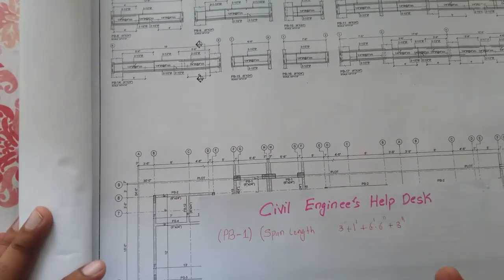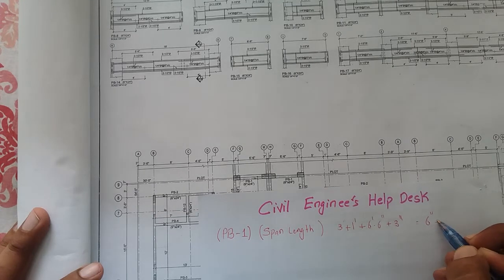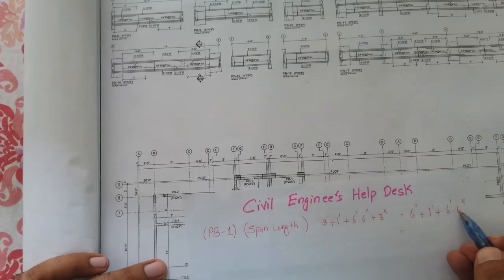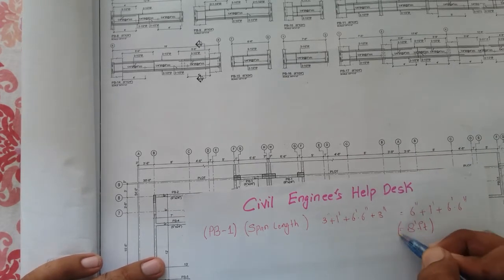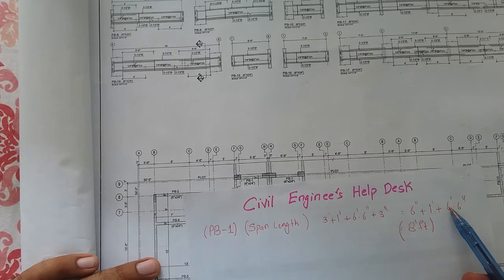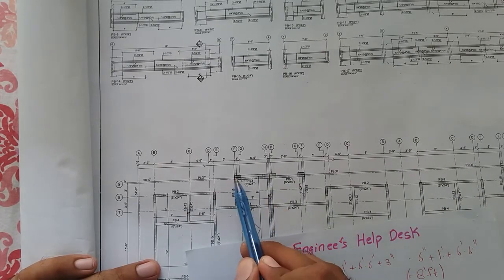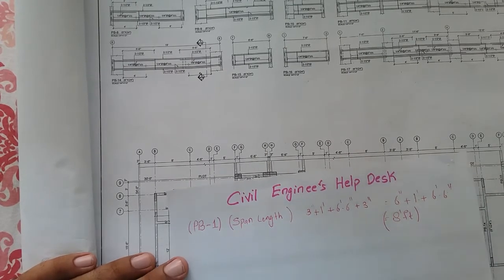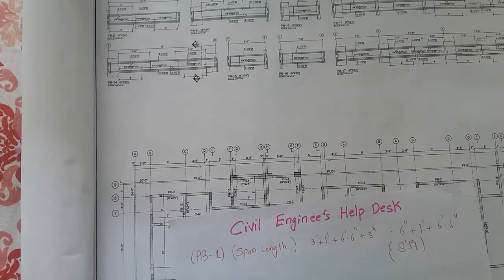Adding everything together: 3 inches plus 1 foot plus 6 feet 6 inches plus 3 inches gives us a total span length of 8 feet. So from here to here, the span length is 8 feet. Once you calculate the span length from the grid, the next steps become very easy.